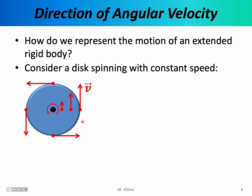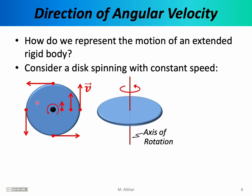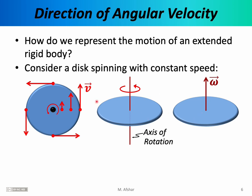This becomes a problem. We would like a single velocity vector to represent the entire motion of the disk. If we look at the disk from the side, we notice it has an axis of rotation — a line through the object around which every point executes circular motion. Different points move at different speeds and directions, but the axis of rotation remains fixed. This suggests we should represent the motion of the disk using a vector that points along the axis of rotation. So we choose the axis of rotation as the orientation for the angular velocity vector.